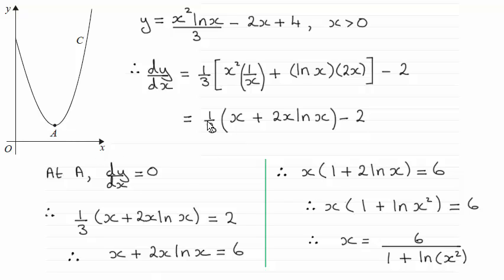So therefore, one third of all of this must equal 2. Multiply through by 3 to give me this. And then I've pulled x out as a common factor.